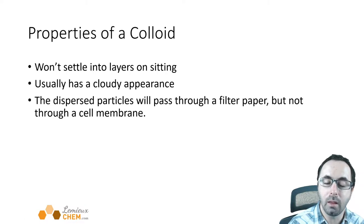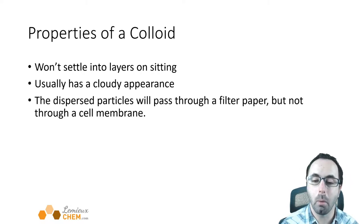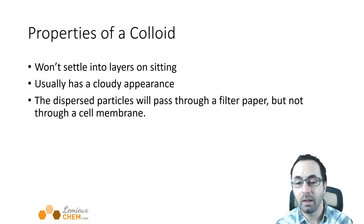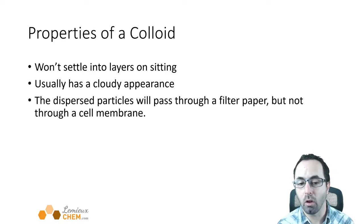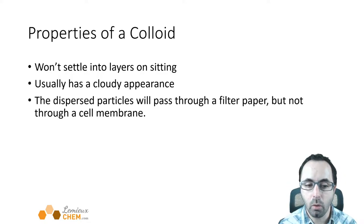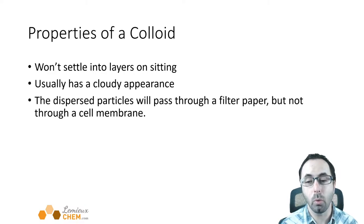If you are trying to separate the components of a colloid, the particles will pass through a filter paper but won't pass through a membrane. You may have heard of reverse osmosis for purifying water — that involves a synthetic membrane. A membrane is a biological or synthetic material with very small holes through which water and other small water-soluble particles can pass, but larger particles cannot. So you can separate the components of a colloid using a membrane, but not using filter paper, because the particles will pass through the filter paper.